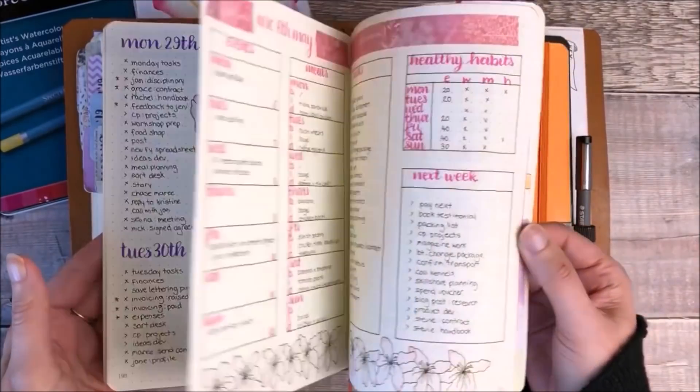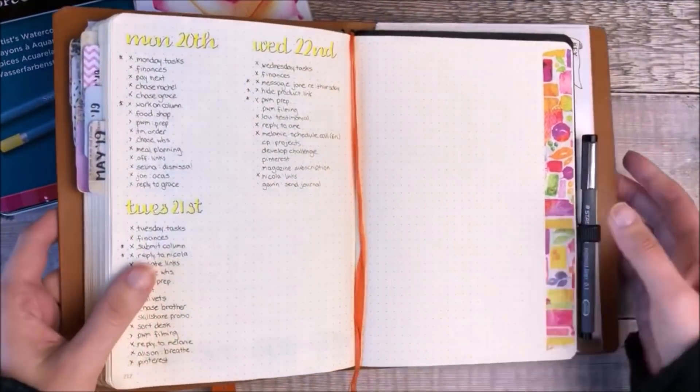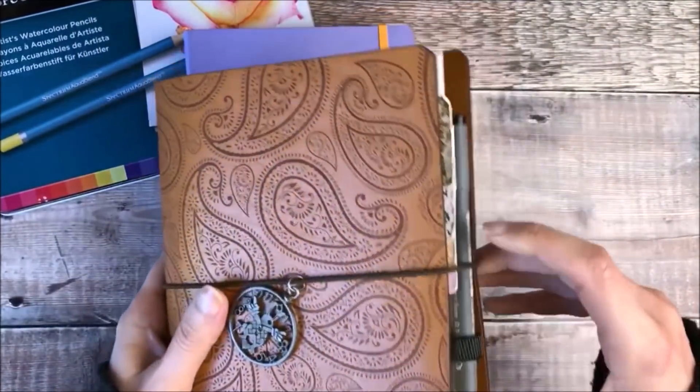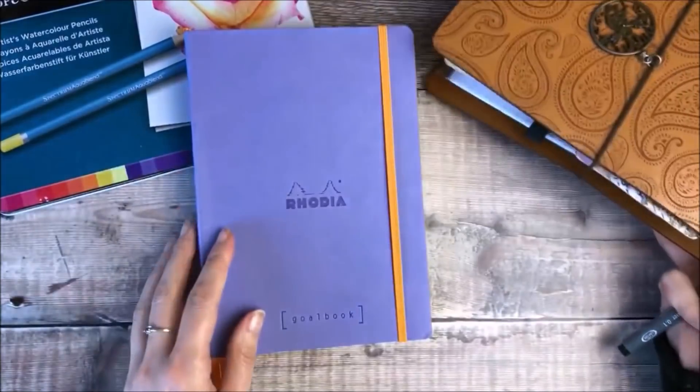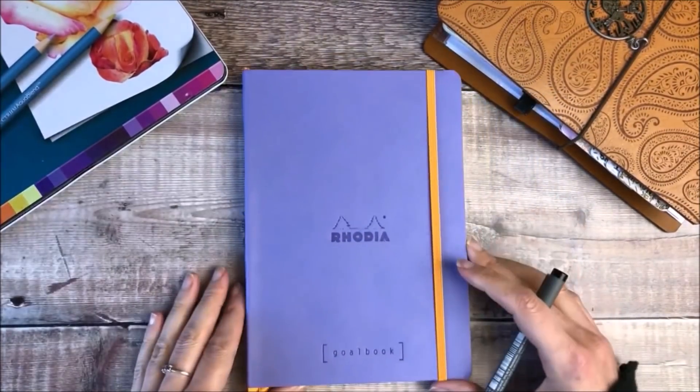I'm just coming to the end of this bullet journal and I don't have many pages left, so I'll be starting a brand new journal for June. As usual, I'm going to be using a Rhodia goalbook with dotted paper.